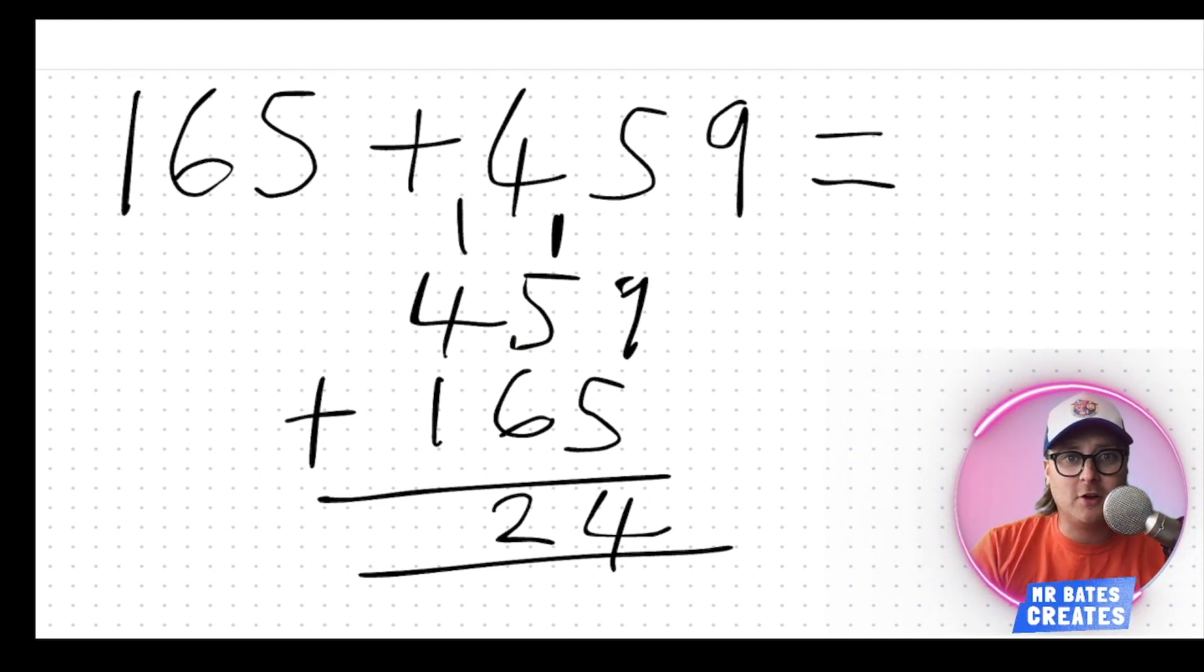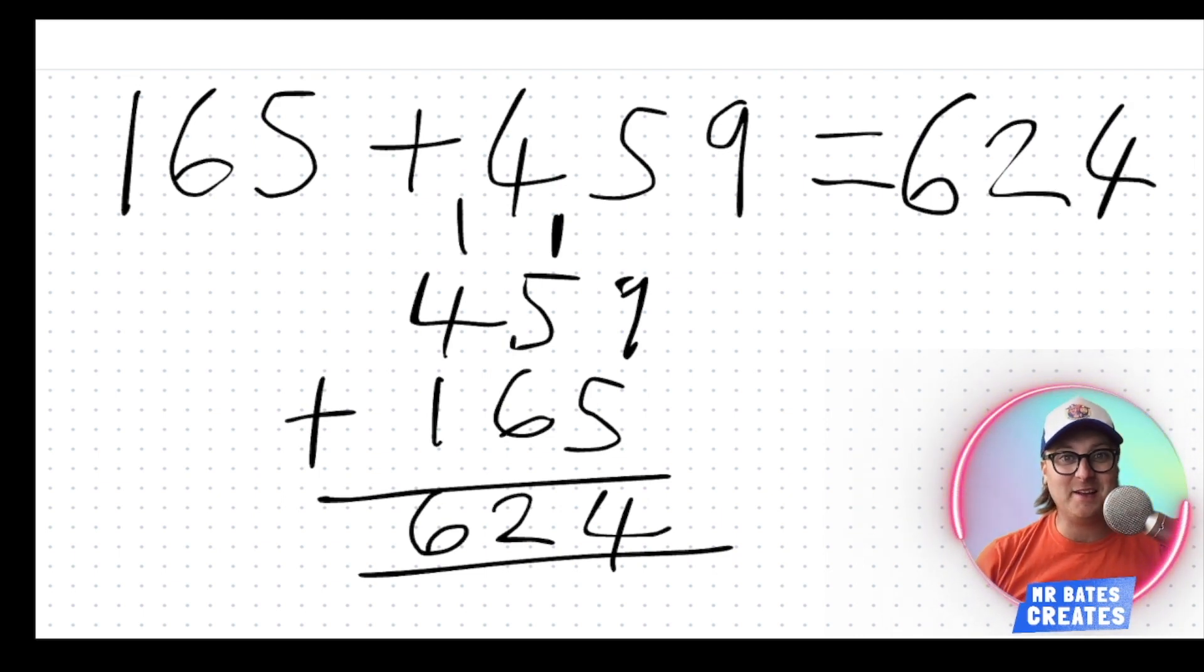Now, last bit, add up the hundreds column. 100, add 400, add 100. Basically four, add one, add one. What's it going to give you? Four, add one, add one. Going to give you the answer of six. Answer six, two, four, six hundred and twenty-four. Did you get it?